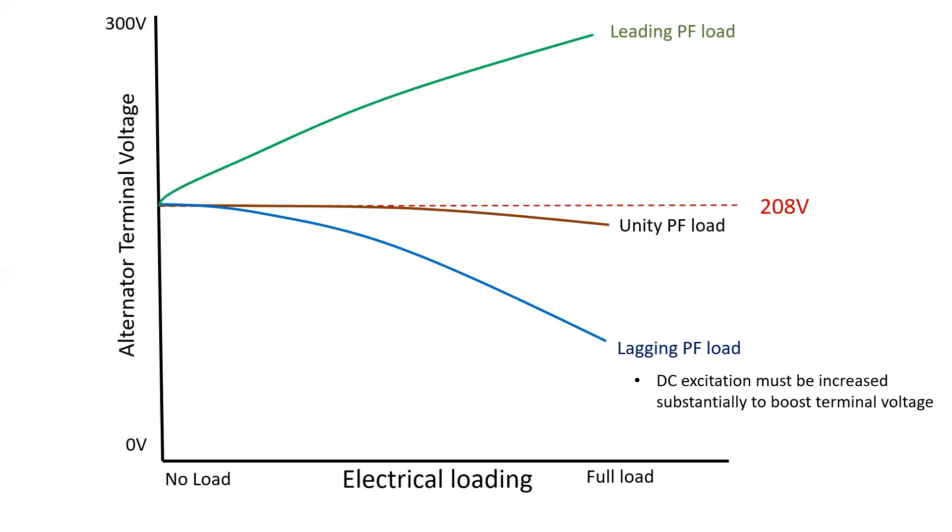In the complete other direction is leading power factor loads. We do not want to be connecting alternators to capacitor banks. And that's because capacitors will cause the terminal voltage of the alternator to increase largely. And it will be uncontrollable at points. This is dangerous because every load connected to the alternator will experience this rise in voltage. And the DC excitation must be decreased substantially to drop the terminal voltage. But at a certain point, you will have decreased the DC excitation so far you can't go any further. And the voltage will still be high and dangerous. So leading power factor loads cause substantial voltage increase at the terminal of an alternator.